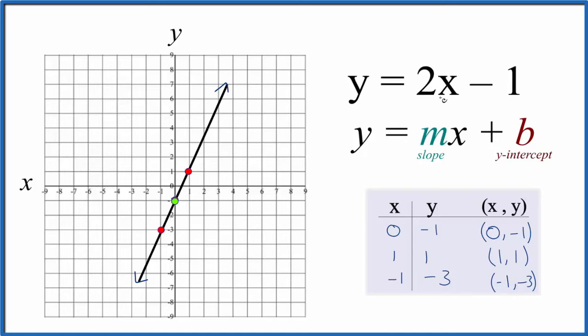For the slope here, we like to think of this as a fraction, 2 over 1. So it's still 2, but we just wrote it as 2 over 1. Same thing. That gives us rise over run. So now we'll rise 2, 1, 2, and run, go over 1. There's our point. We can do that again.